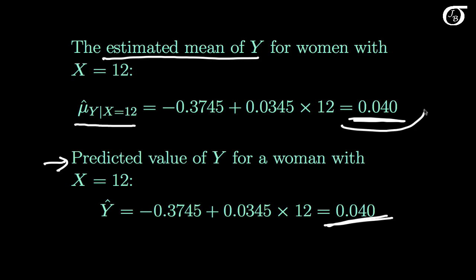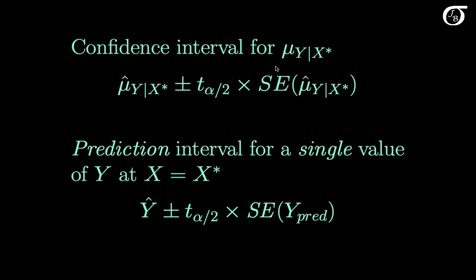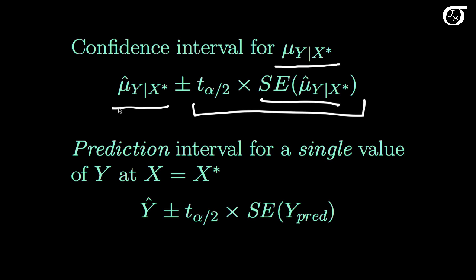If we look at our estimated mean of y at that given value of x, that is a point estimate. In statistics, point estimates are not all that useful without some measure of the uncertainty associated with that value. One common way of expressing that uncertainty is through a confidence interval. The confidence interval for the true theoretical mean of y at a given value of x has a familiar format: we take our best estimator of that true theoretical mean and add and subtract a margin of error, which is a t value times the standard error of the estimator.